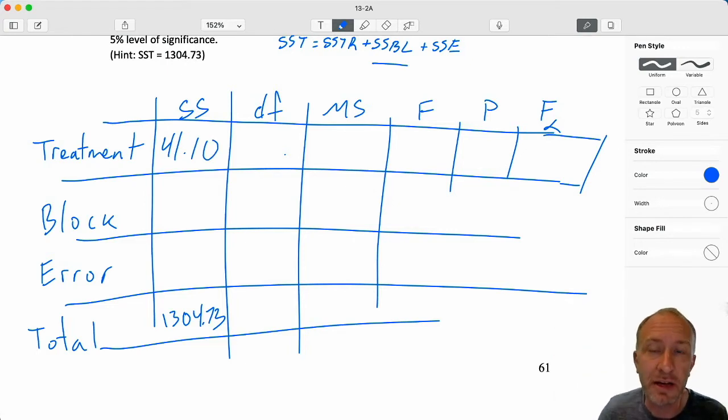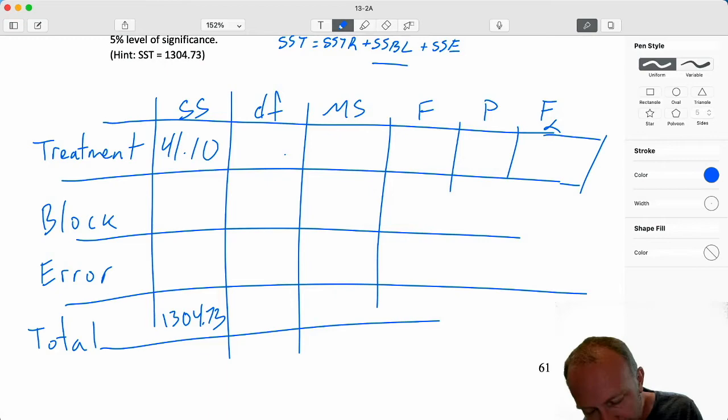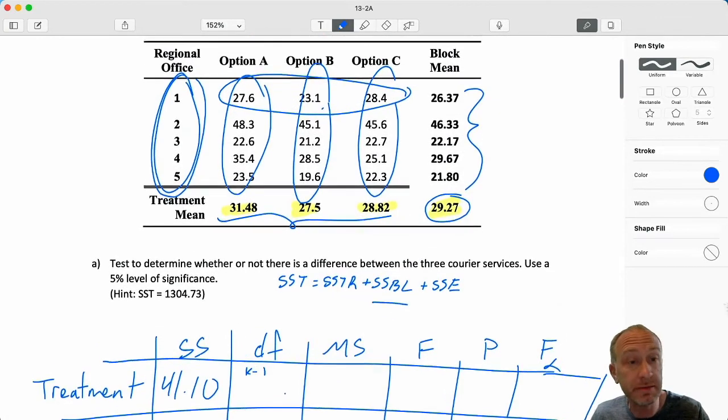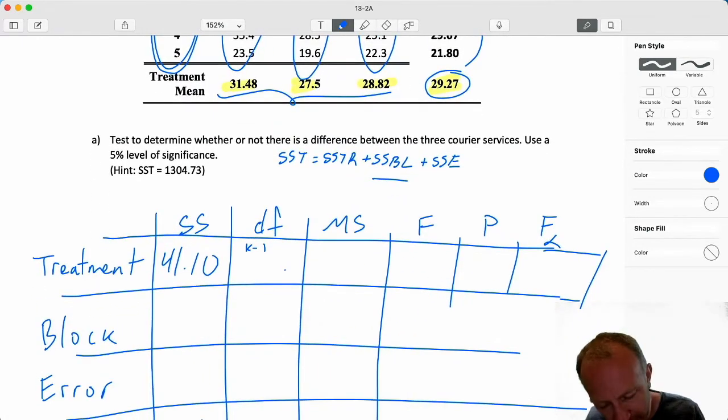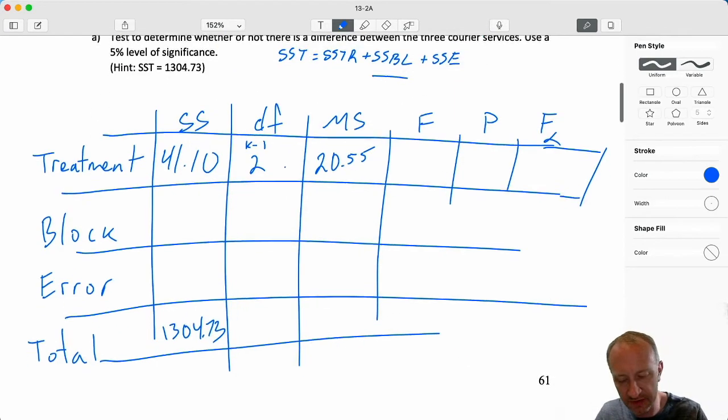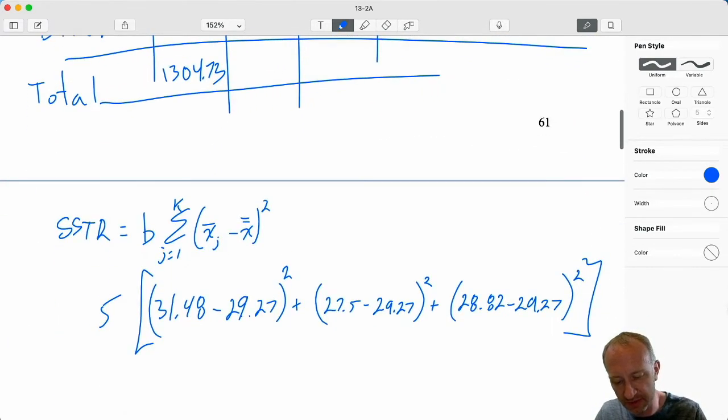And that gives me 41.1. Okay, just like that. Pretty familiar calculation, right? Degrees of freedom, same as always, k minus one. Here I have three treatments. So k minus one is two. That mean squared is exactly the same. It's our sum of squares divided by our degrees of freedom. So that'll be 20.55.